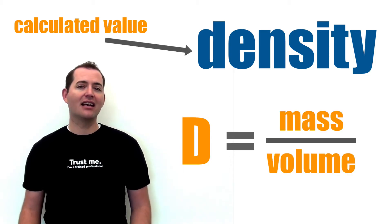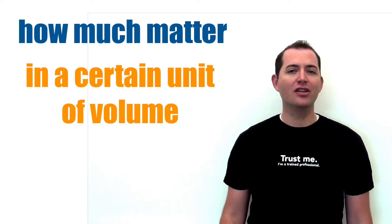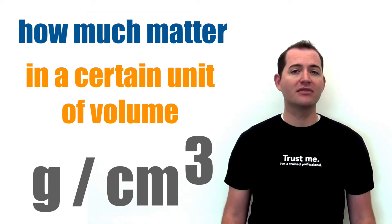The SI units for density are grams per cubic centimeter. Density is described as how much matter is in a certain unit of volume. In the case of the SI units mentioned, this is how many grams are in each cubic centimeter.